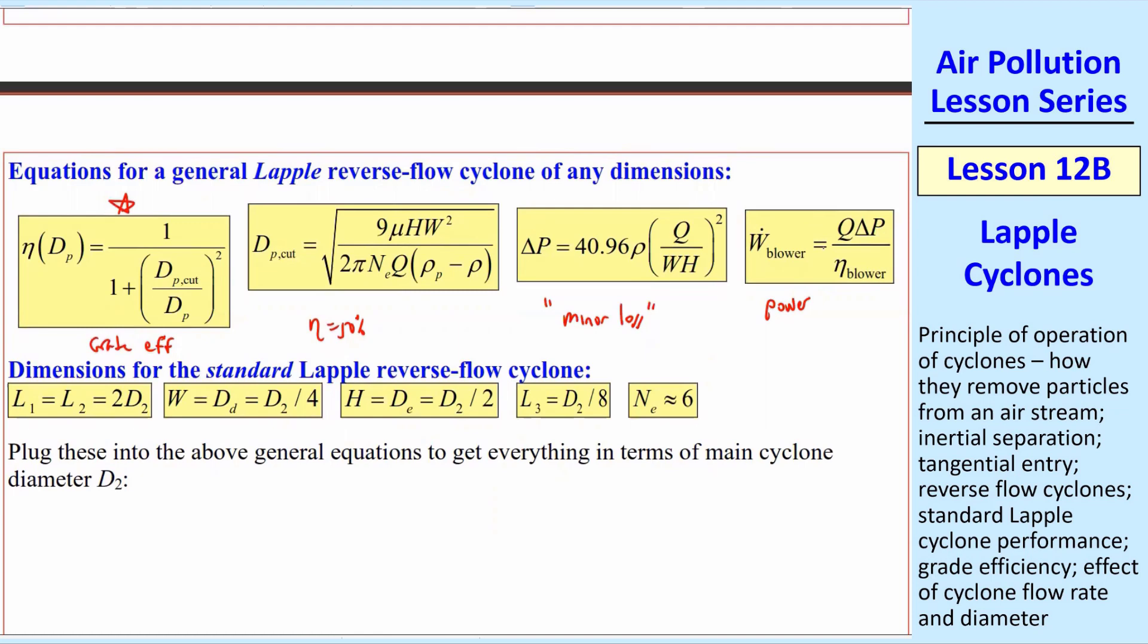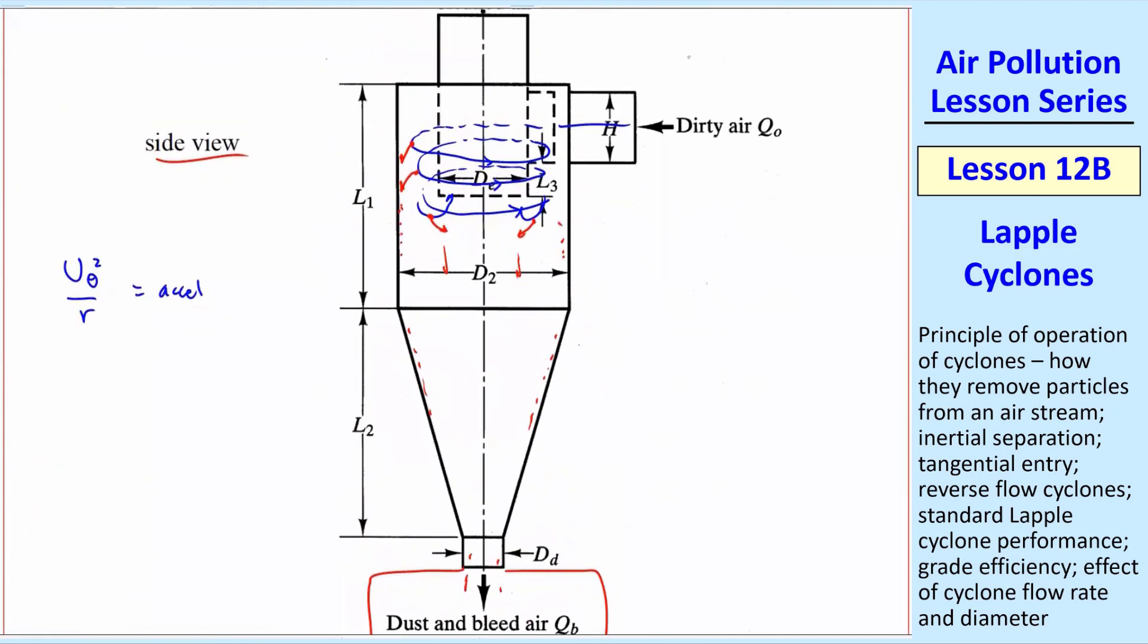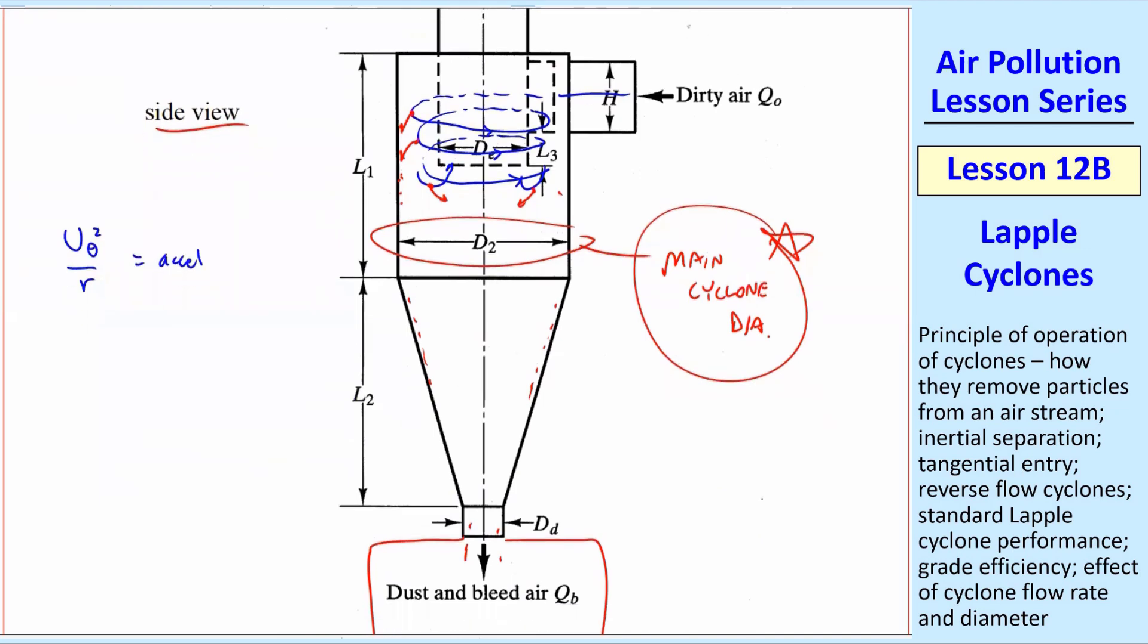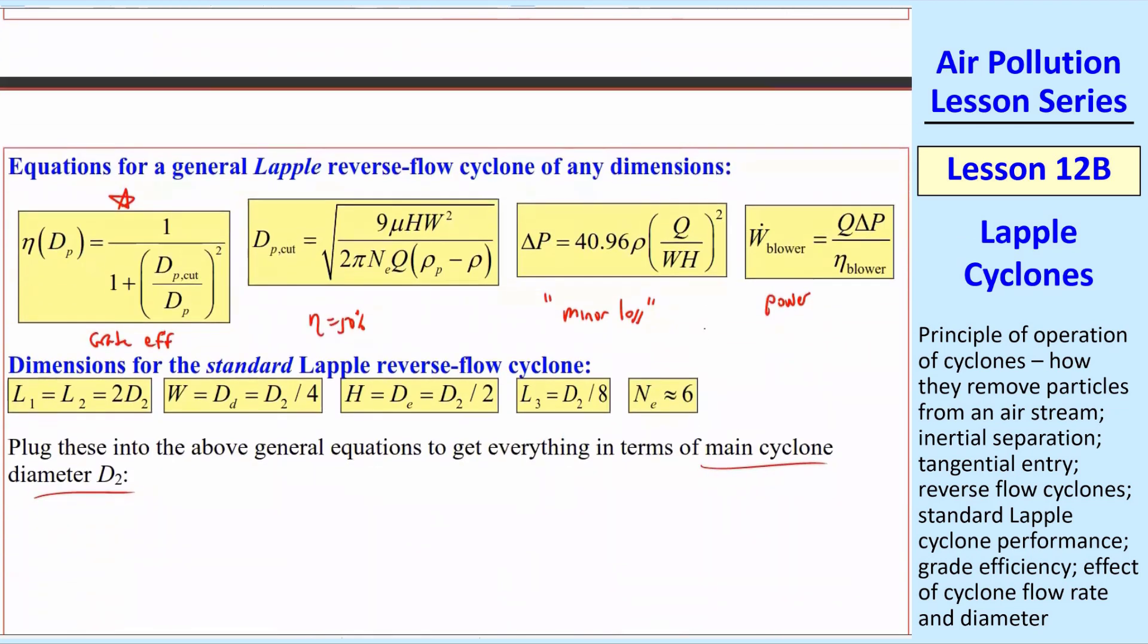Now for the standard Lapple reverse flow cyclone, you can make this of any size as long as we put everything in terms of this main cyclone diameter D2. So if you remember our picture, that's this diameter here. This is the main cyclone diameter. So if you say I have a cyclone of diameter D2, that's the D2 they're talking about. It's the overall diameter of this cylinder. Therefore, we put everything else in terms of D2. Notice here, for example, L1 and L2 are 2D2, and W and H are all defined in terms of D2.